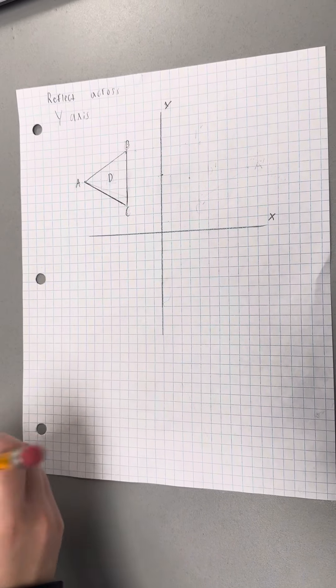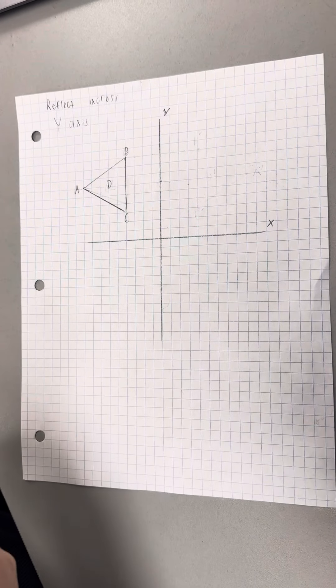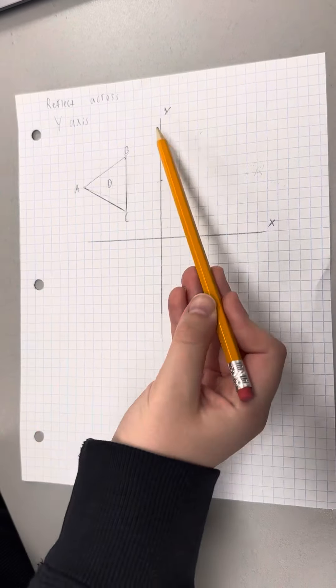So firstly, we can see that we have our triangle and it's reflecting across the y-axis. Remember that the y-axis is going vertically or up and down.